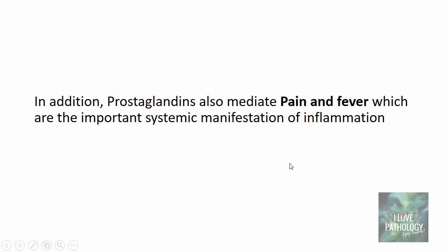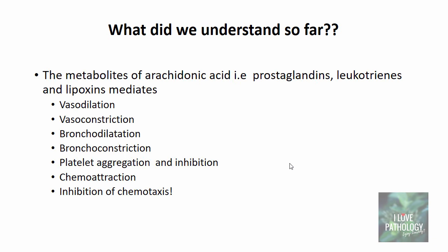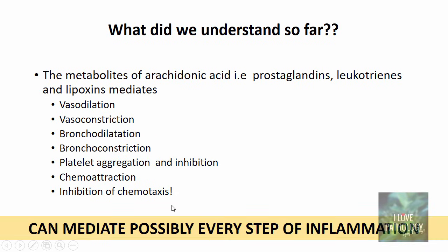Apart from these effects, prostaglandins also mediate pain and fever, which are the most important systemic manifestations of inflammation. In summary, the metabolites of arachidonic acid — prostaglandins, leukotrienes and lipoxins — mediate vasodilation, vasoconstriction, bronchodilation, bronchoconstriction, platelet aggregation and inhibition, chemoattraction and inhibition of chemotaxis. This means these mediators can mediate possibly every step of inflammation.